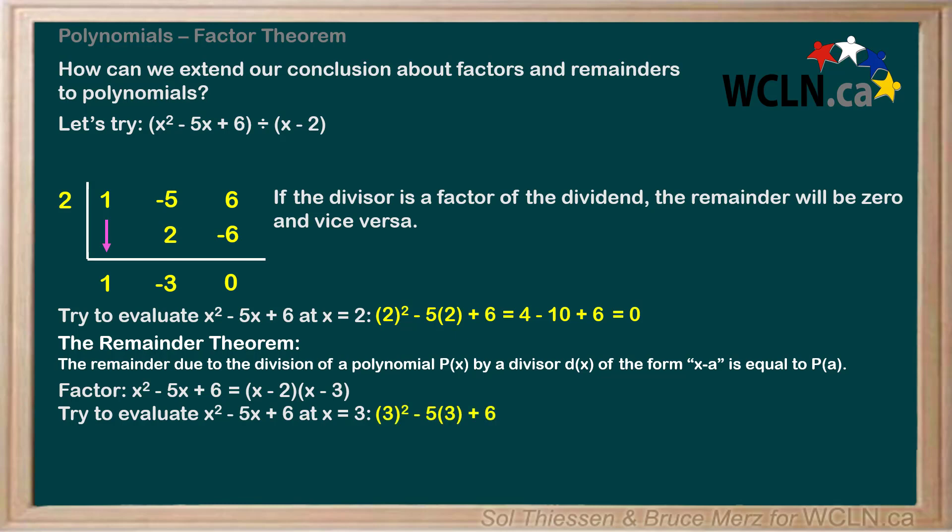Putting 3 in for all the x's in the polynomial, we get 3 squared minus 5 times 3 plus 6, which we can simplify down to 9 minus 15 plus 6, which gives us 0 as our result. What conclusion can we draw here?